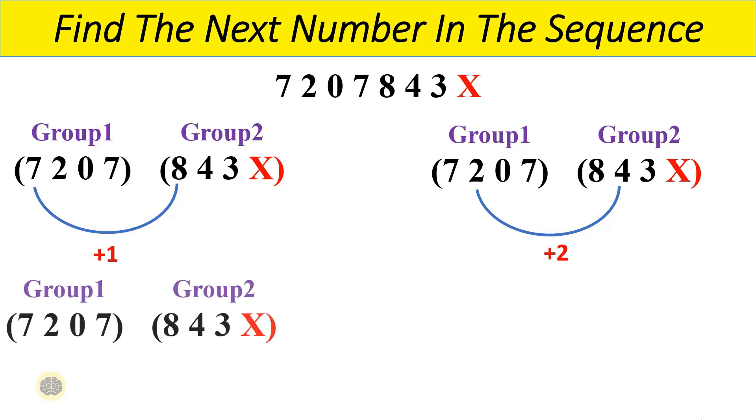Now consider the third digit of the first group and add 3 to it, which will result in 3, which is the third digit in the second group. Here, the third digit of the first group is 0, hence after adding 3 to it the result will be 3, which is the third digit in the second group.